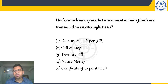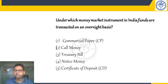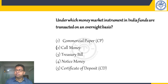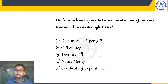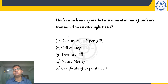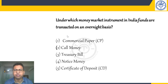Notice money is from 2 days to 14 days — a bank can borrow from another bank for that duration. Term money is from 15 days to 1 year. So call money is overnight, notice money is 2–14 days, and term money is up to 1 year. Certificates of deposits and commercial papers are also money market instruments, and we will discuss them further in the next few slides.